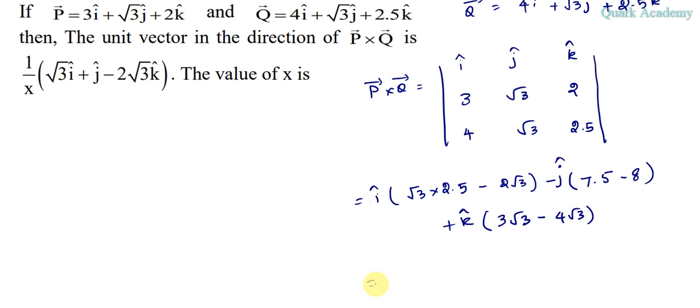Let's simplify this: i cap root 3 by 2 for the first term, second term will be plus j cap 1 by 2, 0.5 will come, I have written as 1 by 2, and the third term is plus root 3 k cap.